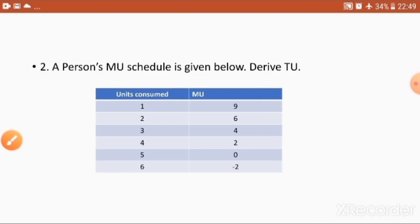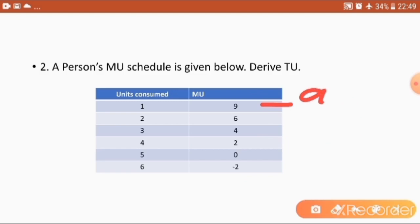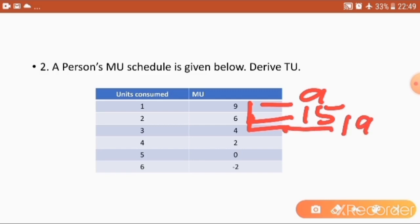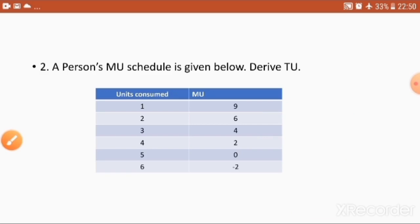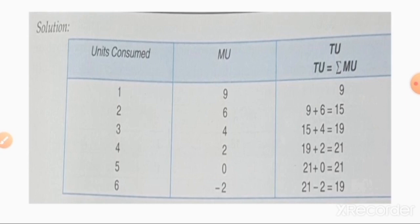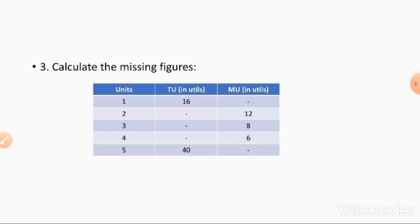To summarize: total utility for the first unit consumed is 9. Consuming the second unit: 9 plus 6 equals 15. Third unit: 15 plus 5 equals 19 — wait, 15 plus 4 equals 19. Fourth unit: 19 plus 2 equals 21. Then 21 plus 0 is 21. And 21 minus 2 gives 19. This is the way to find out the total utility.